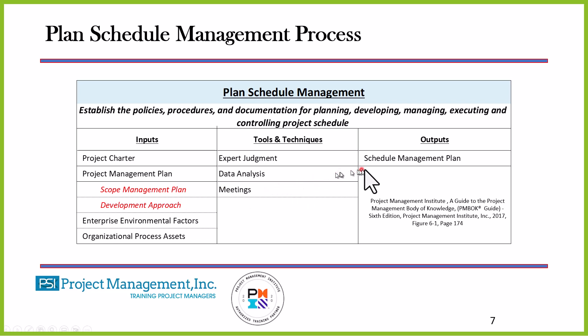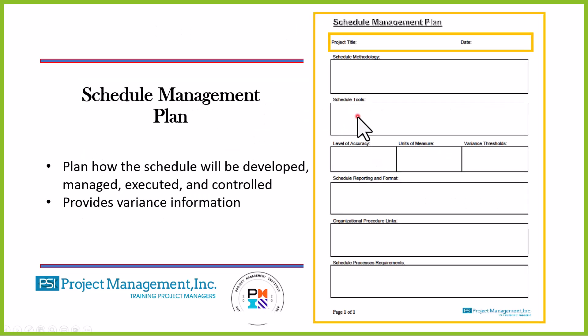As an output of this process, we have the schedule management plan. The schedule management plan tells us how the schedule will be developed, managed, executed, and controlled. It also gives us the level of variance information — we may have a threshold, and as long as we stay within that threshold we don't have a variance. If we exceed that threshold, we have a variance and must take action through a change request to correct it.